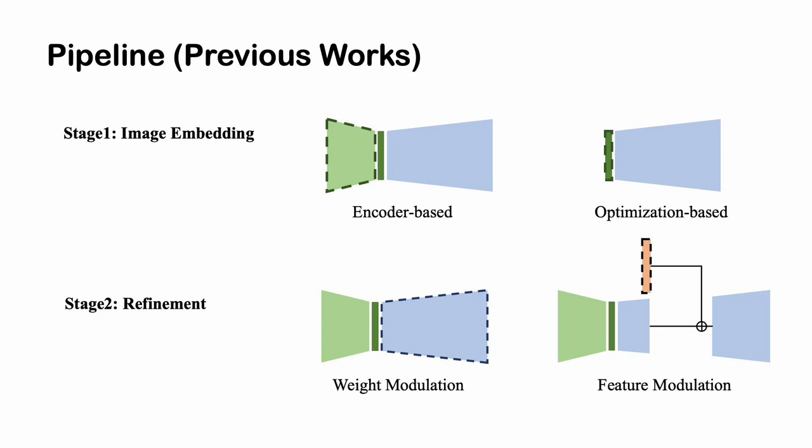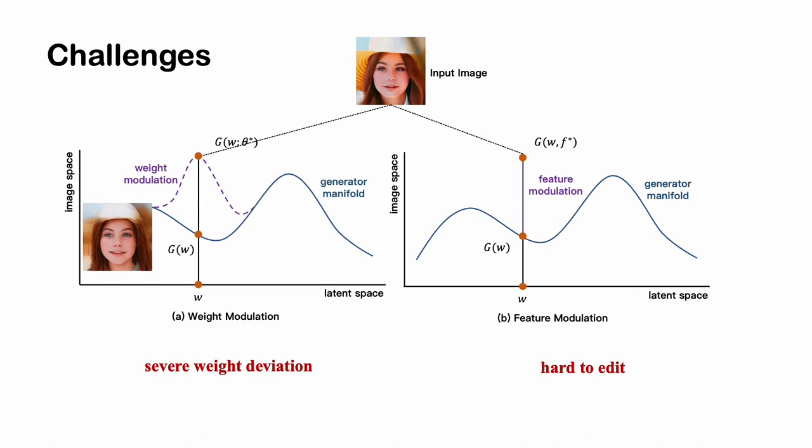Many recent works explore the incorporation of additional high-rate information, including generator weight as left part and intermediate feature as right part. However, they meet challenges in fidelity and editability trade-off.